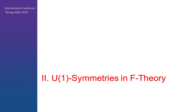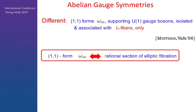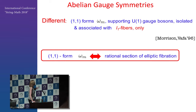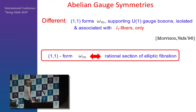Let me go on to further developments in the context of the appearance of abelian gauge symmetry in F-theory. Abelian gauge symmetries in F-theory appear geometrically in a somewhat different way because the harmonic (1,1) form associated with a U(1) gauge boson should be related to a divisor that is isolated — really an I1 fiber only associated with U(1) divisors. It was observed that this (1,1) form supporting U(1) associated with isolated I1 fibers are in one-to-one correspondence with rational sections of the elliptic Calabi-Yau.